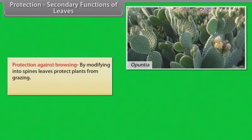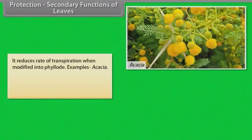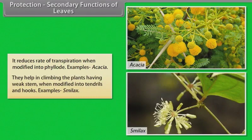Protection. Protection against browsing by modifying into spines. Leaves protect plants from grazing. Examples: Opuntia and Barberry. It reduces rate of transpiration when modified into phyllode. Examples: Acacia. They help in climbing the plants having weak stem when modified into tendrils and hooks. Examples: Smilax.